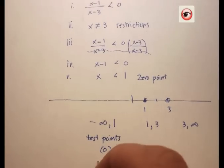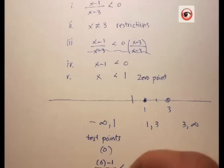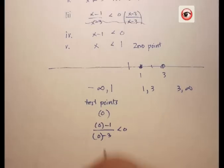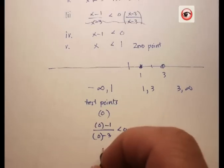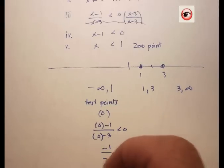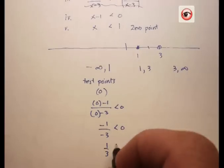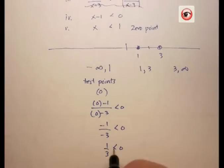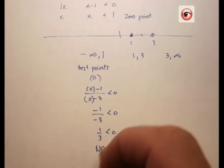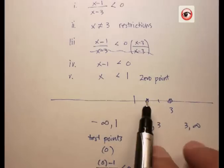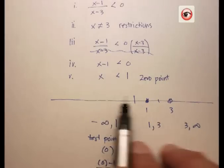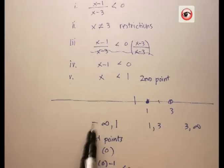Going back to my problem, zero minus one over zero minus three is less than zero. Let's see if that's true. Zero minus one is negative one over negative three - that's going to become a positive third. Is a positive third less than zero? The answer is no. So I will not be shading any number from this interval. Nothing in there will work.